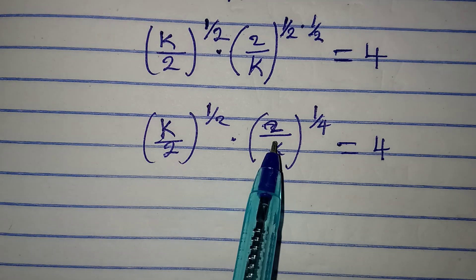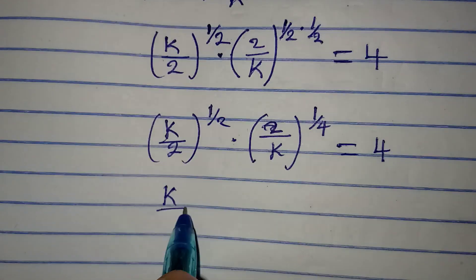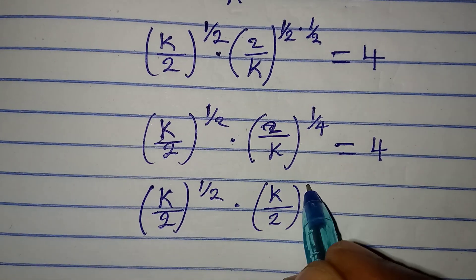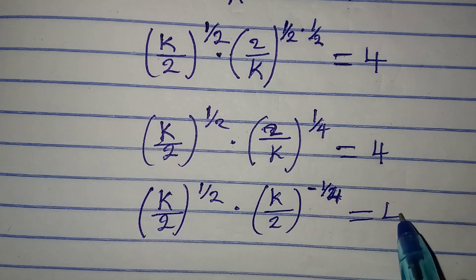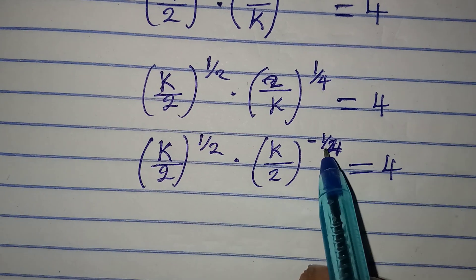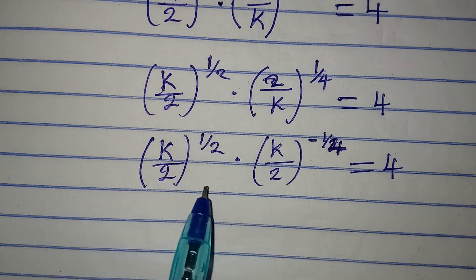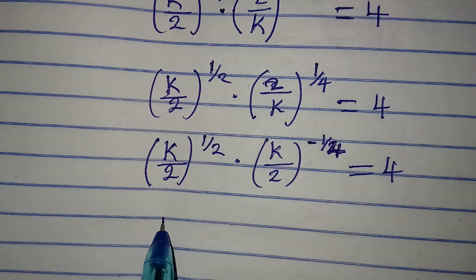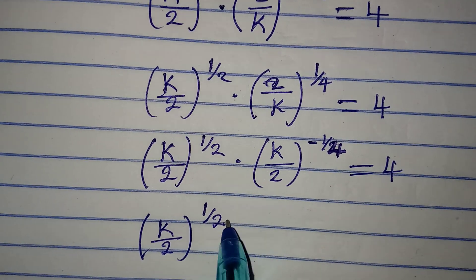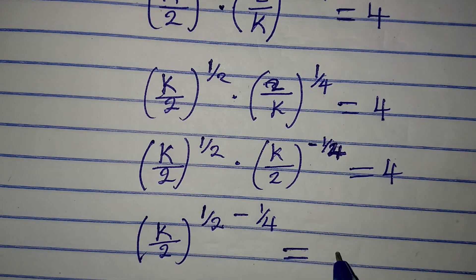Now, what do I have to do in this case? Remember, we're having k over 2 here and 2 over k. I want to work on this middle term. So that's k over 2 to the power of 1 over 2, multiplied by k over 2 to the power of negative 1 over 4, equal to 4. What I did here is to invert 2 over k to k over 2, but the power will turn to negative. Now we have the same base, k over 2, so I will have to add the powers. It's going to be 1 over 2 minus 1 over 4, because positive times negative gives us negative, and everything is equal to 4.